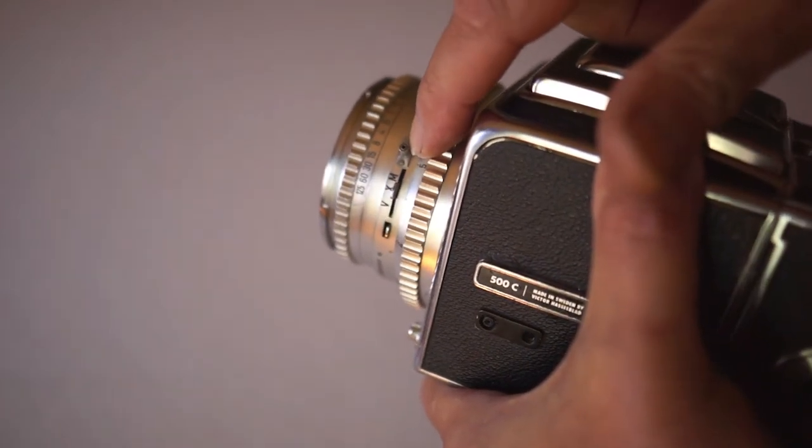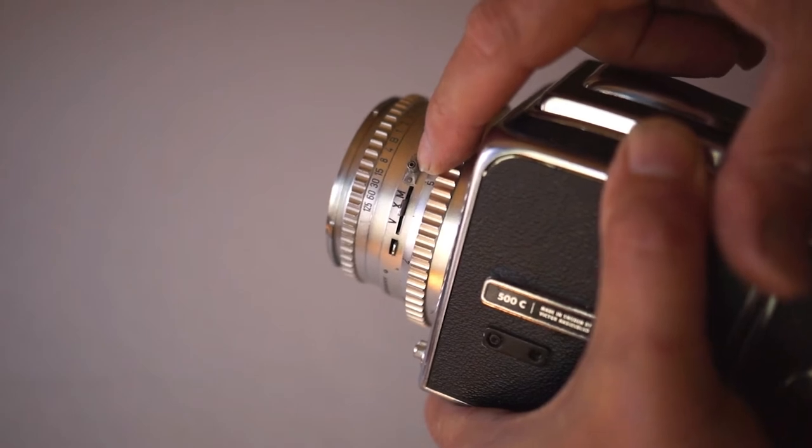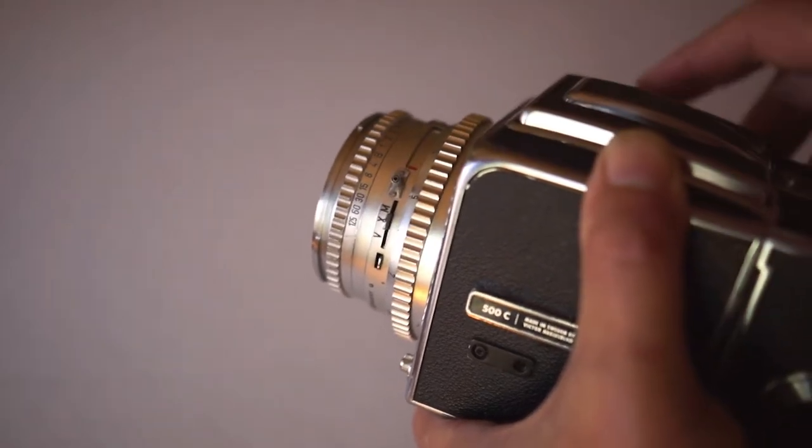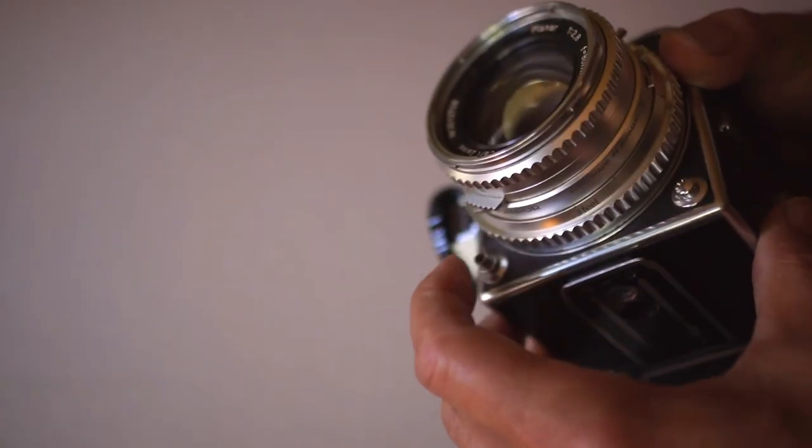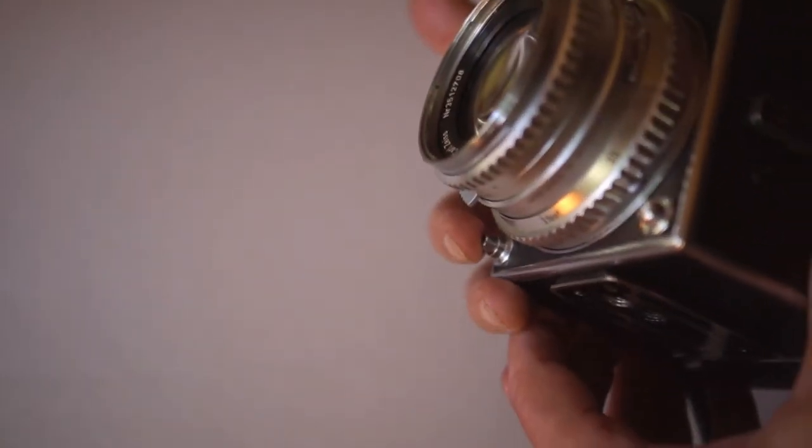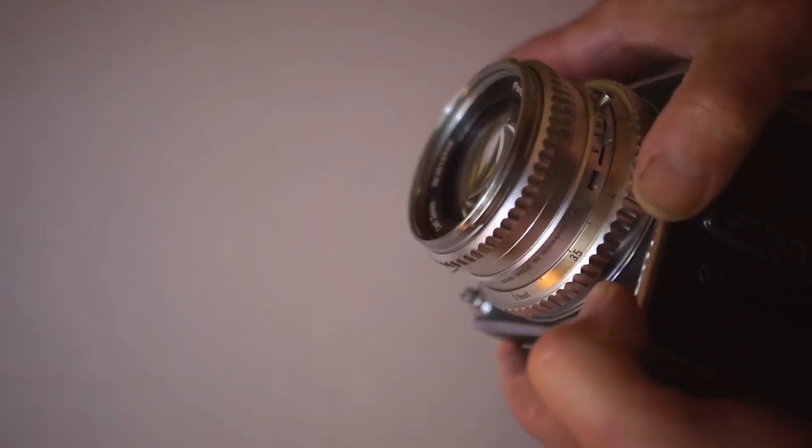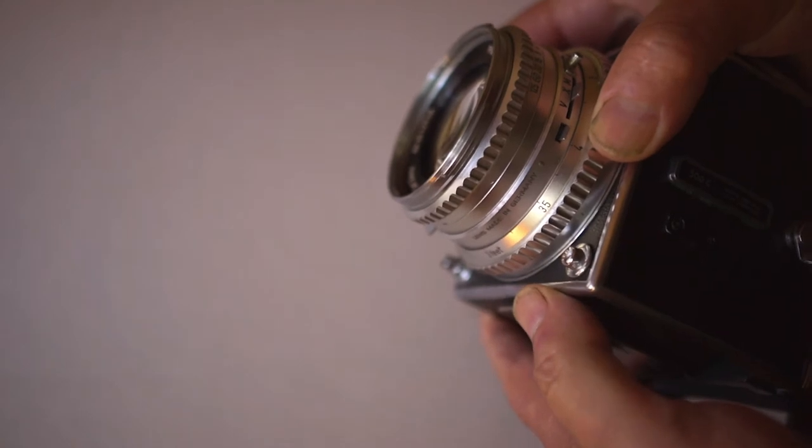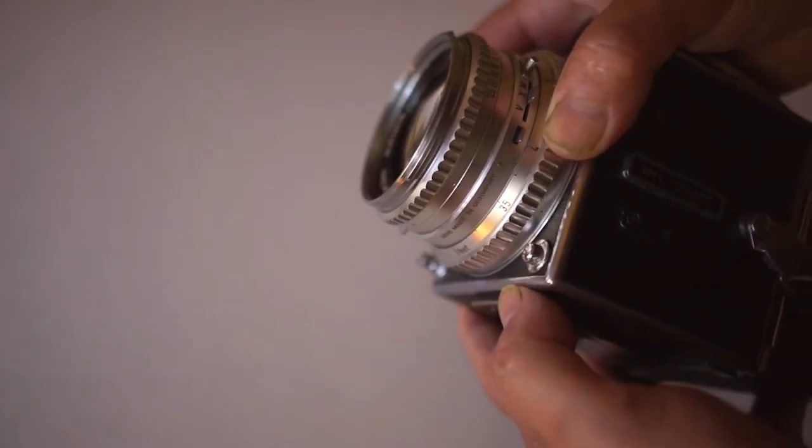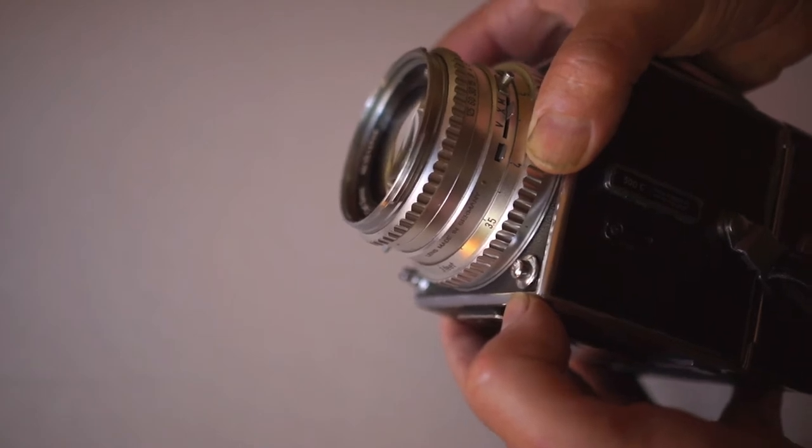There's a PC outlet for the electronic flash, and that's right above where the synchronization is. On the bottom of the camera is the shutter release, which is set up for a right-handed person. Opposite that is the lens release if you need to change lenses, and I do have a longer and a wide-angle lens for Hasselblad in my office.